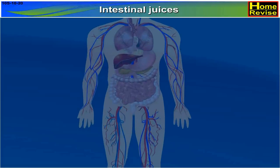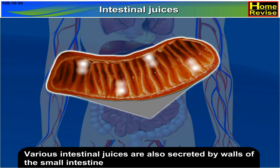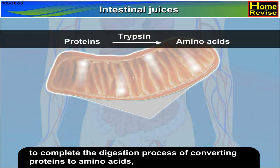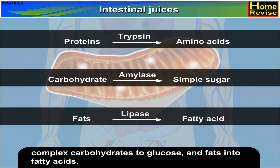Various intestinal juices are also secreted by the walls of the small intestine to complete the digestion process, converting proteins to amino acids, complex carbohydrates to glucose, and fats into fatty acids.